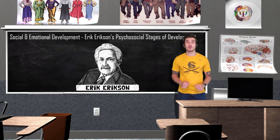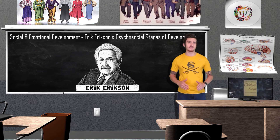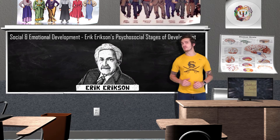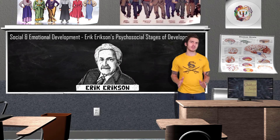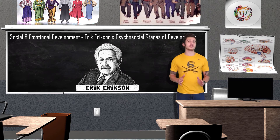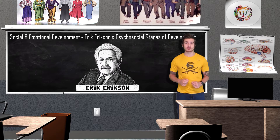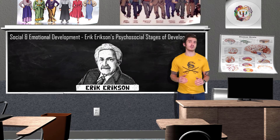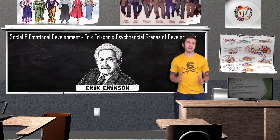In 1950, Erik Erikson published his book Childhood and Society, featuring his well-known eight stages of social development. As a neo-Freudian, Erikson adhered to some of Freud's ideas but focused more on social influences as a form of development. His theory on psychosocial development centers around crisis resolution — at each of his eight stages a crisis must be resolved, and if it is not, the individual may lack the positive characteristics of that stage.